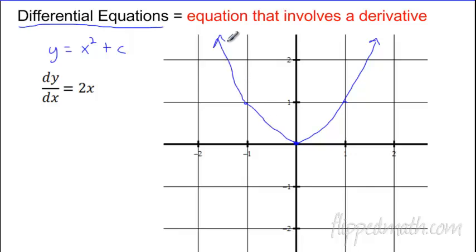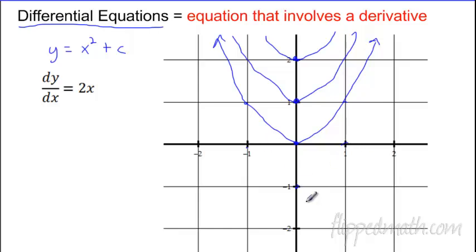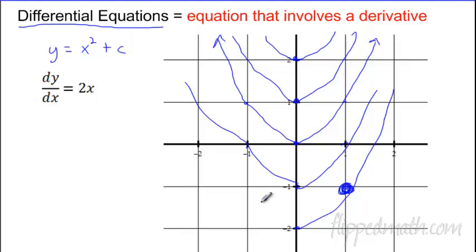Maybe C is 0, and I have this parabola. Or maybe it's 1, so I could have this parabola. Or maybe C is 2 — so depending on whatever C is. I won't know from this unless it gives me more information. Basically, I'm creating a picture here where it's a bunch of parabolas. Depending on what C is, it determines where my parabola sits. So for this differential equation, I know its anti-derivative — it's a family of functions.